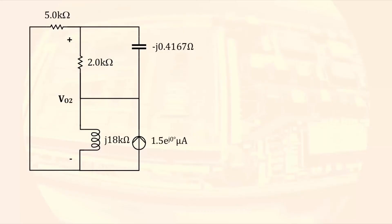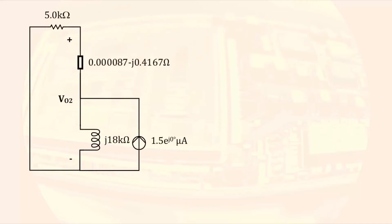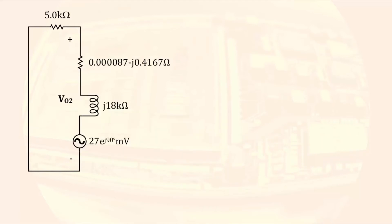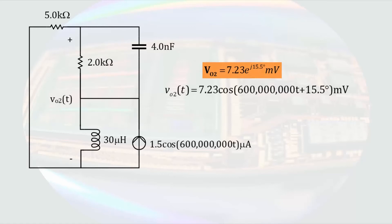To begin analyzing this circuit, I notice the parallel impedances at the top. Since combining them does not affect the voltage we are trying to determine, we combine them into a single impedance. Notice that because the impedance of the capacitor is so much smaller than the resistor, the capacitor dominates the parallel combination — the impedance is almost entirely imaginary. Our simplified circuit is one source transformation away from everything being in series. Multiplying the current source by its parallel impedance gives an equivalent voltage of 27 millivolts with a phase angle of 90 degrees. Using voltage division, VO2 results in a phasor voltage with a magnitude of 7.23 millivolts and a phase angle of 15.5 degrees. This phasor is converted back to the time domain with an original angular frequency of 600 megaradians per second.